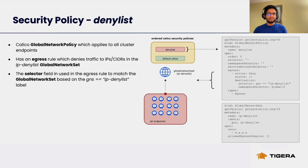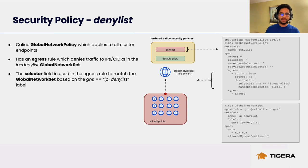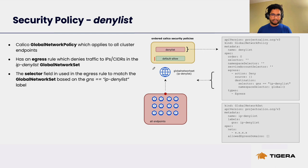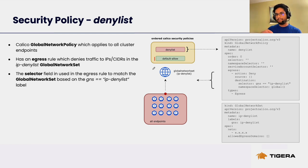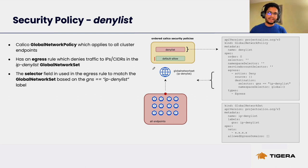Before implementing policies, assuming this is a live production cluster, I've started with a default allow — a policy that allows all traffic. Remember, in Kubernetes by default all traffic is allowed, but once you've matched pods in a policy there is an implicit deny behavior. I'm using this default allow as a failsafe so that I don't impact any live production traffic in this cluster.